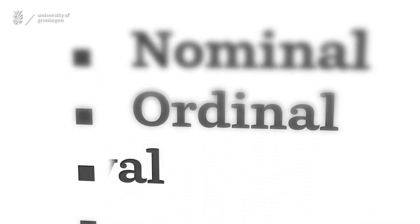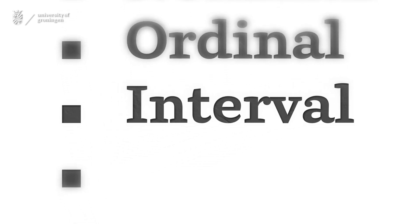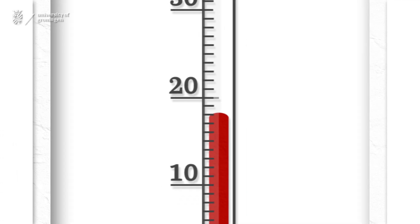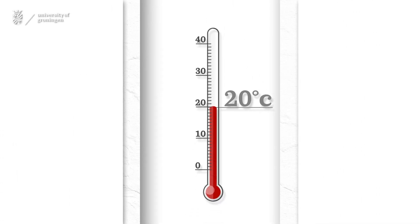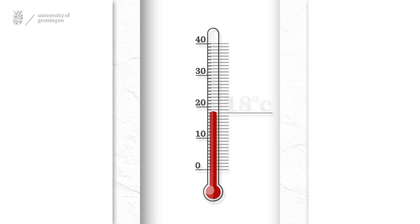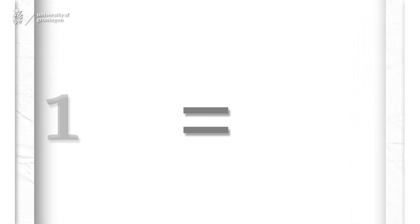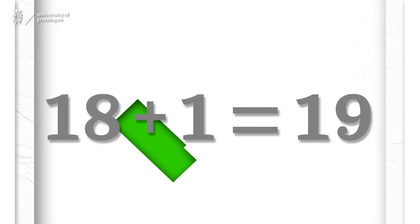This brings us to the third data type: interval. For this data type, the intervals are equal. For example, temperature — 20 degrees Celsius is 1 degree warmer than 19, which is 1 degree warmer than 18. These distances are equal, which allows you to make basic calculations.